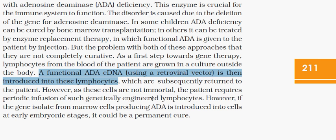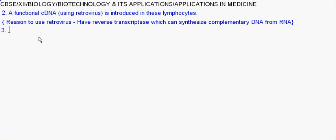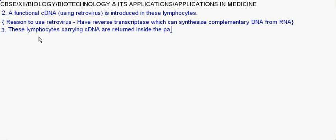These lymphocytes carrying cDNA are returned inside the patient. And the fourth step: as these cells are not immortal, periodic infusion of such genetically engineered lymphocytes is continued — that's the fourth step.